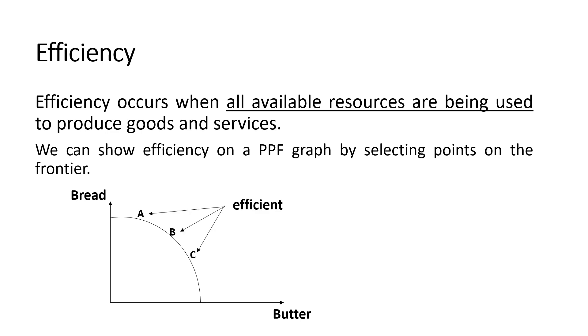For example, points A, B and C are efficient points because at these points we are using all available resources to produce bread and butter.